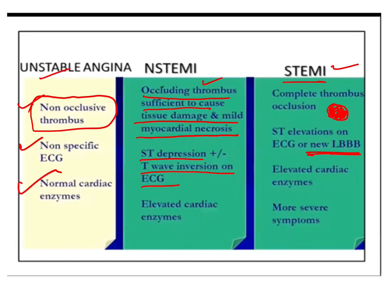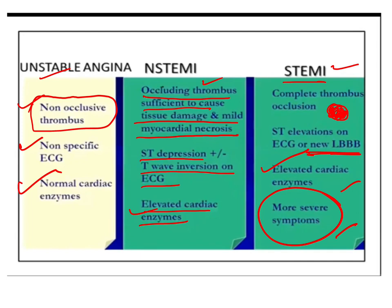Cardiac enzymes in unstable angina are normal, but in non-ST elevation MI the cardiac enzymes are elevated, and in ST elevation MI the cardiac enzymes are elevated with more severe symptoms. ST elevation MI: ST elevation in ECG, new LBBB, complete thrombus occlusion, elevated cardiac enzymes, more severe symptoms. Non-ST elevation MI: partial occlusion, possible ST depression or T wave inversion, elevated cardiac enzymes.